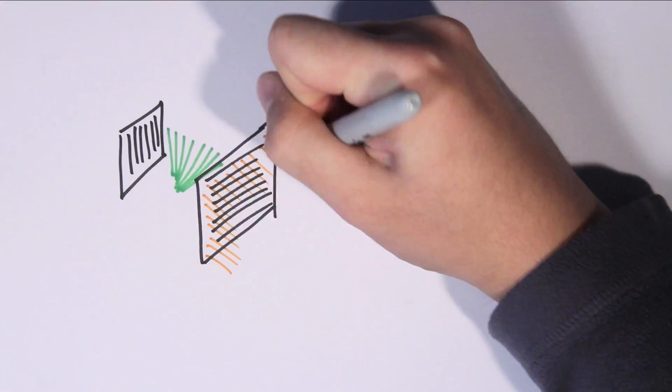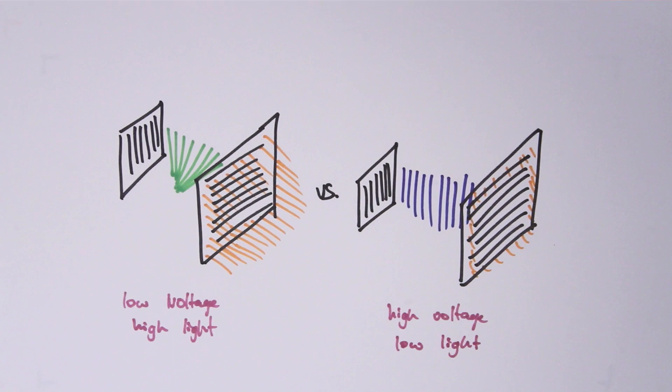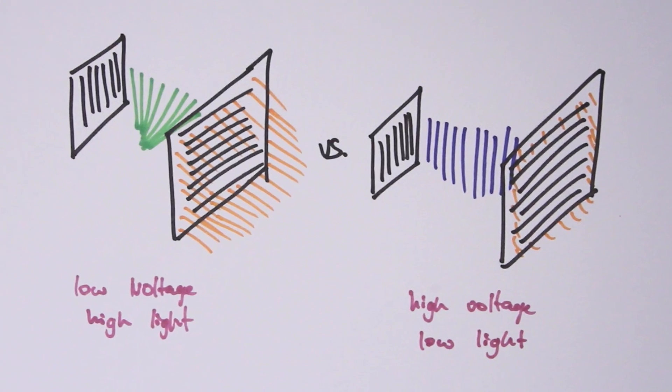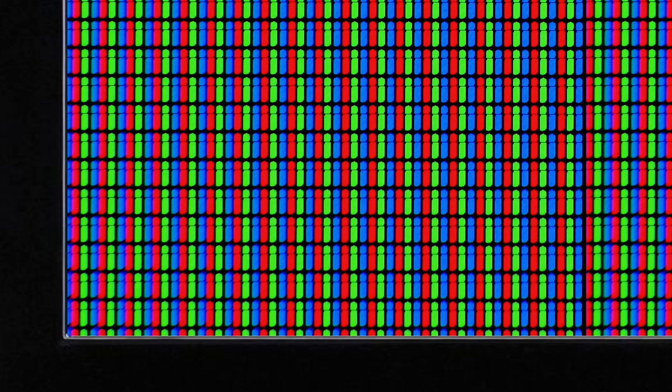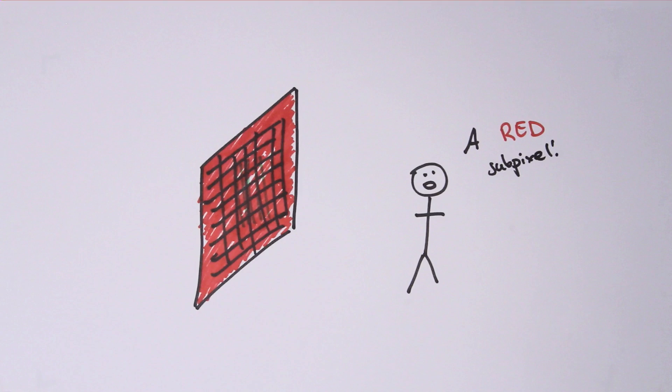These subpixel units all have their own electrodes, so that they can be controlled independently. Have you ever noticed the dots on your TV? These are called pixels, and for the most part, contain three subpixels of different colours. A colour filter is put over a subpixel to obtain the desired colour: red, green or blue.